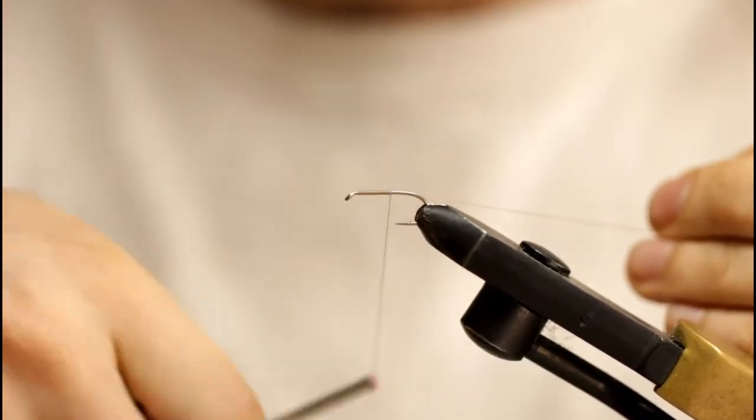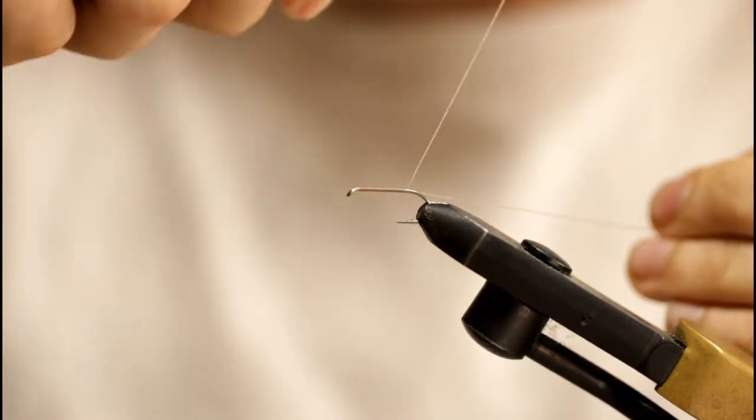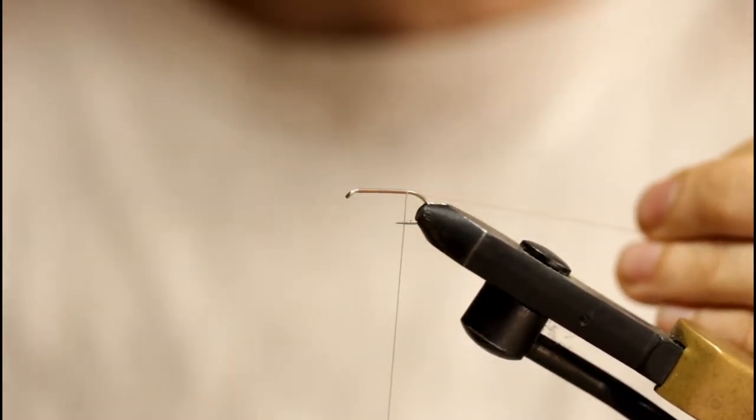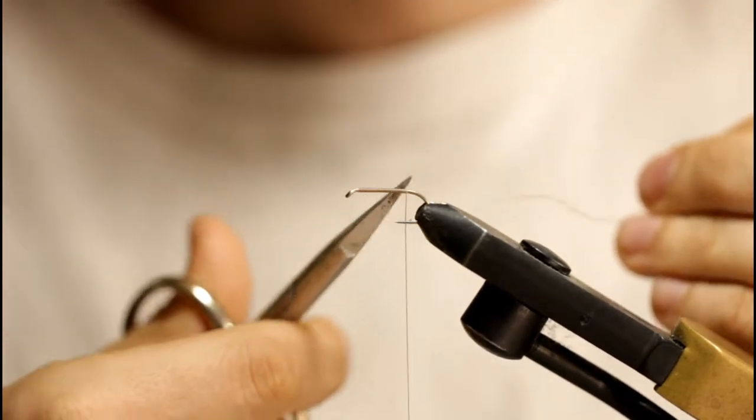So I start my tan thread behind the hook eye and stop in between the point of the hook and the barb and snip off the excess tag there.